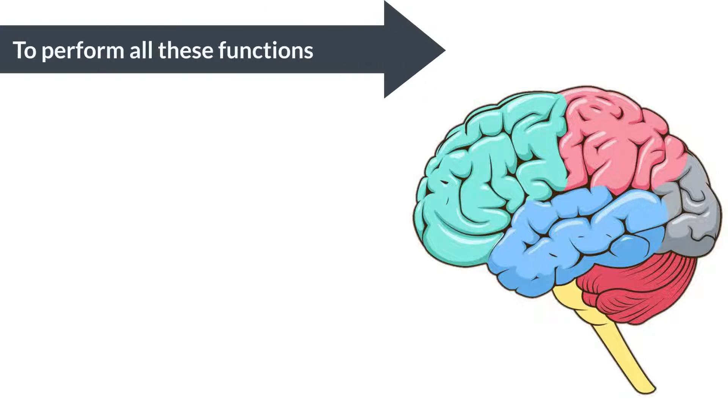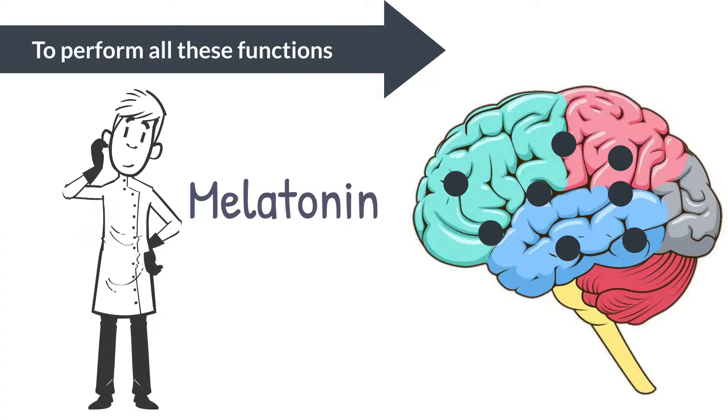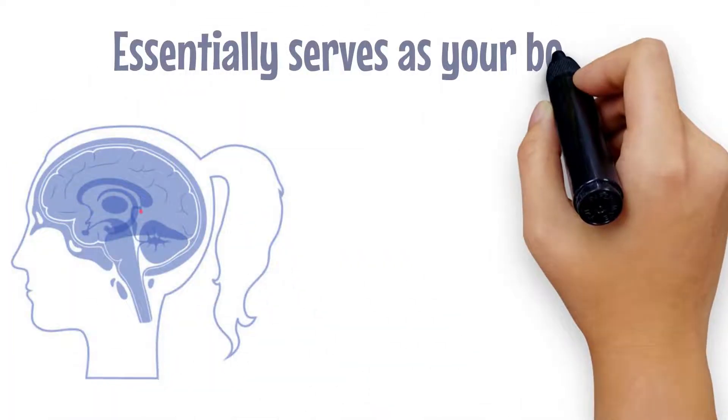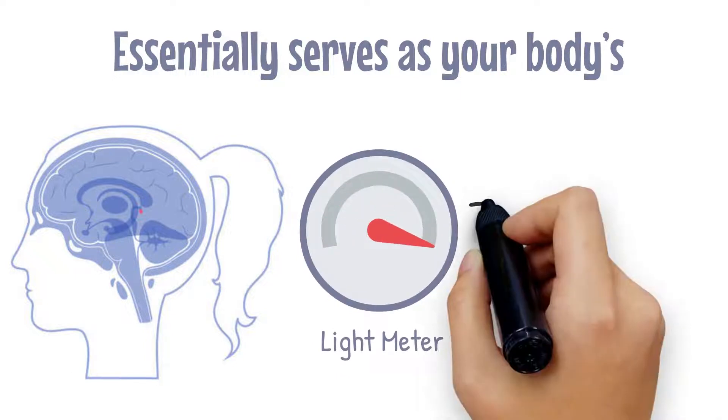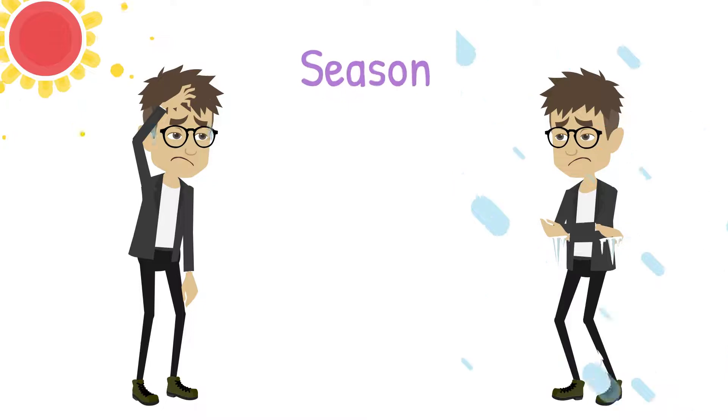To perform all these functions, the pineal gland secretes a hormone known as melatonin. But how does the pineal gland know when to produce this hormone? The pineal gland essentially serves as your body's light meter, where it receives cues or activation factors from your eyes about the time of the day and seasonal length of the days.